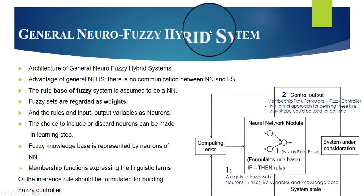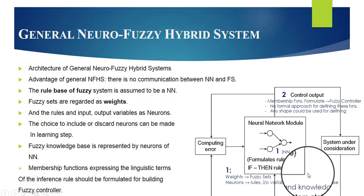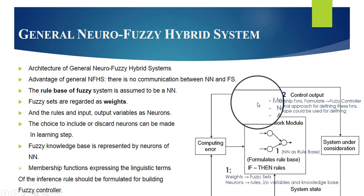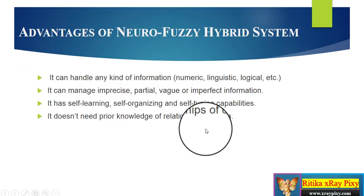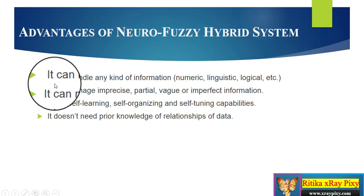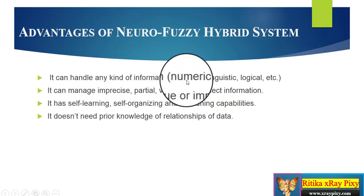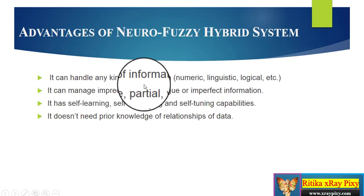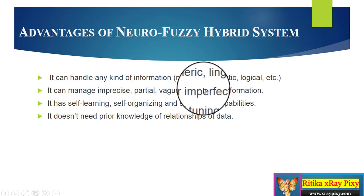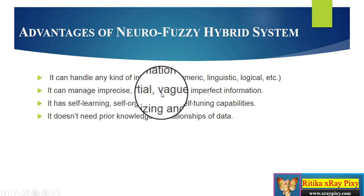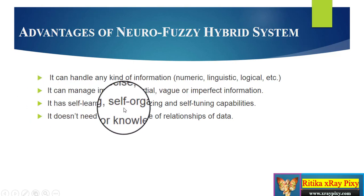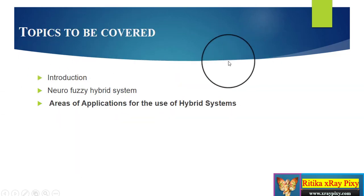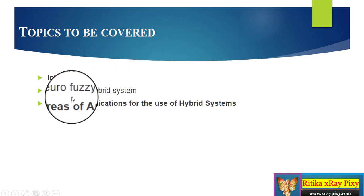This is the final architecture of the neuro-fuzzy hybrid system. One main advantage is that there is no communication gap between the neural network and fuzzy system. The neuro-fuzzy hybrid system can handle any kind of information — numeric, linguistic, or logical. It can manage imprecise, imperfect, or partial data, and it has self-learning, self-organizing, and self-tuning capabilities.